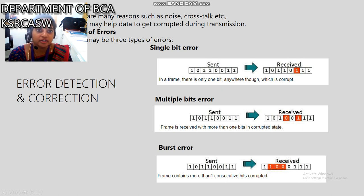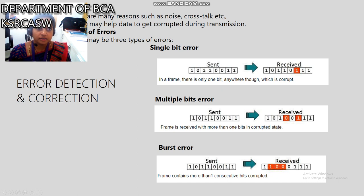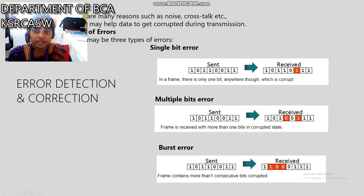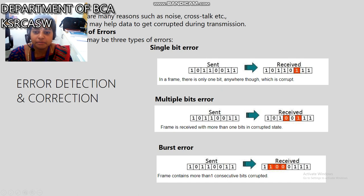There are many reasons for error detection and correction, such as noise, crosstalk, etc. There are three types of errors. The first is single bit error. Single bit error means that among all the zeros and ones, a transmitted zero is received as a one. This is an example of a single bit error.